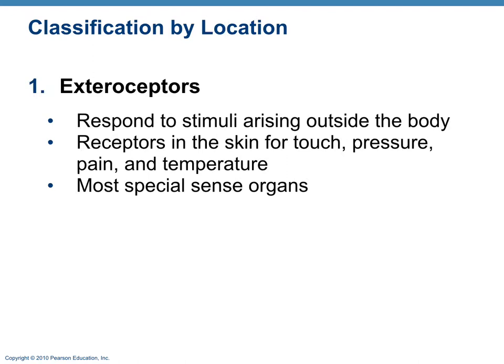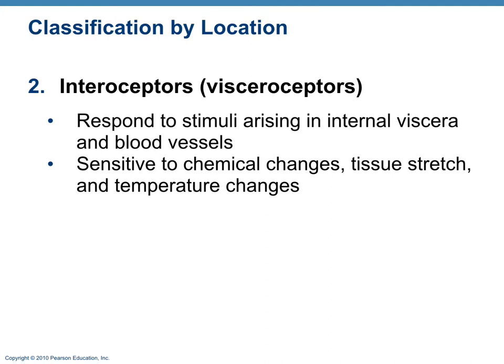If we classify receptors according to location, we have exteroceptors — ones that respond to stimuli outside the body, such as receptors on the skin for touch, pressure, pain, and temperature. Most special sense organs are classified as exteroceptors. Interoceptors, also called visceral receptors, respond to stimuli from inside the body — the internal viscera, organs, and blood vessels. They are sensitive to chemical changes, tissue stretch, and temperature changes from the inside.